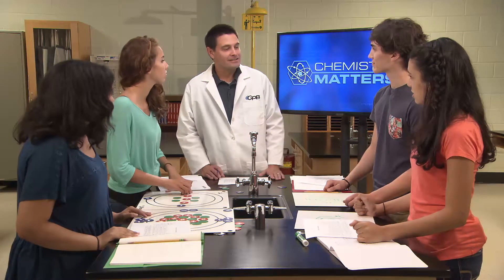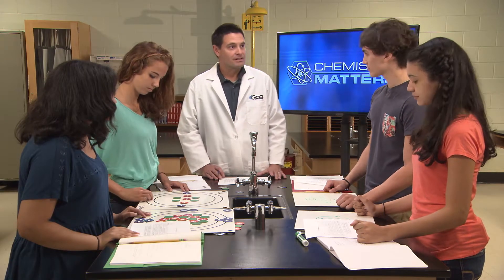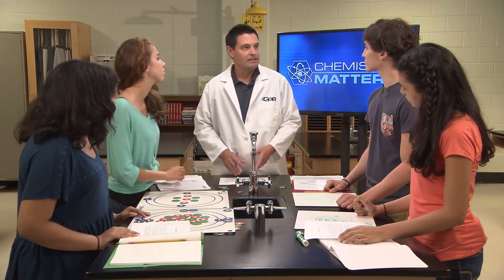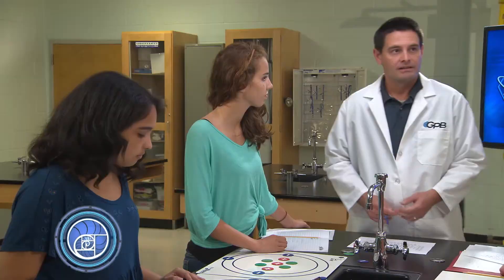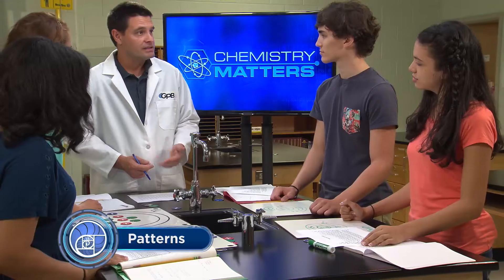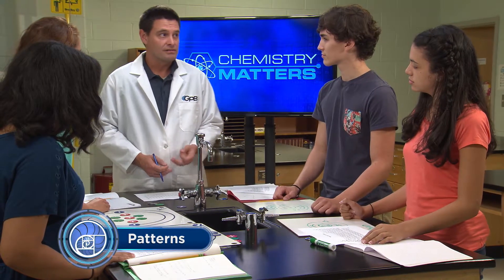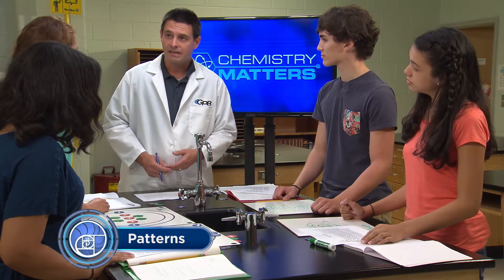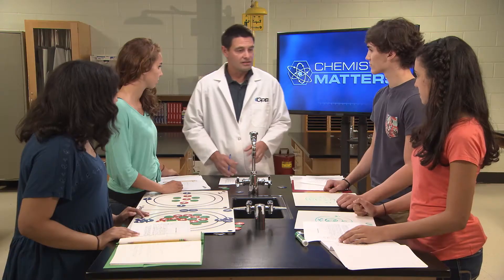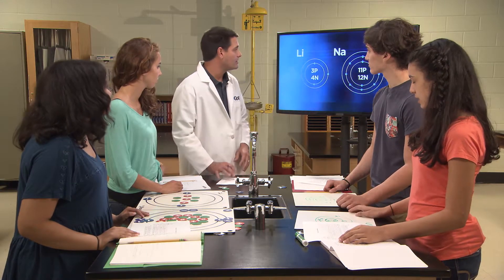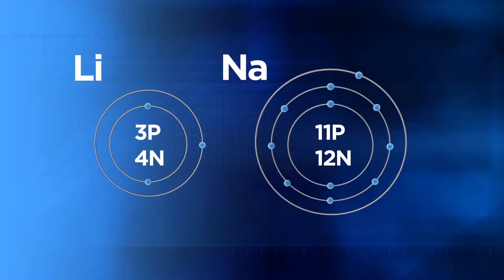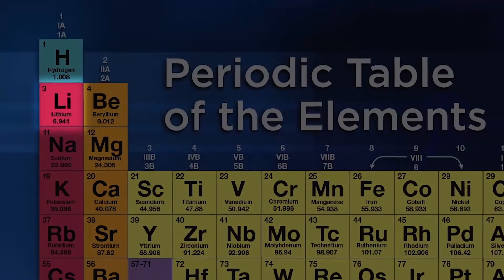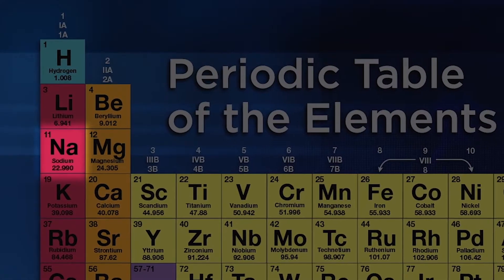Let's look again at our Bohr models of lithium and sodium, and let's see if we can predict how our three atomic properties will differ. We'll discuss the trend of ionization energy moving down a group on the periodic table first, and then you'll explore in teams the trends of electronegativity and atomic radius as we go down a group. So let's start by looking up close at our Bohr models of lithium and sodium while we try to predict their ionization energies. Who would like to predict what happens to the ionization energy as we move from lithium down to sodium on the periodic table?